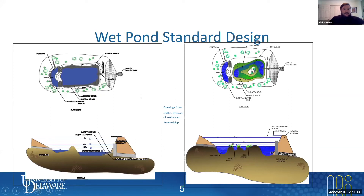Here's your standard design for a wet pond. Looking at the image on the left: you can see inlets on the left side and one here — that's where your drainage comes in. It comes into this forebay. That's a pretty big forebay for a pond; I usually see them a little smaller than that. But this area does a lot of the filtering — it captures the...